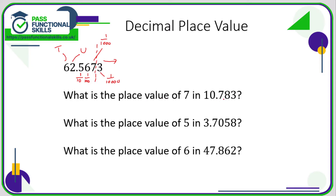So what is the place value of seven in 10.783? It's the first column after the decimal point, which is our tenths column, so it has a value of seven tenths.